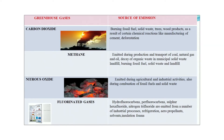The sources of greenhouse gases: carbon dioxide is the primary one — from burning of fossil fuels, solid waste, trees, and wood products, certain chemical reactions like manufacturing and cement, and deforestation. Methane is emitted during production and transport of coal, natural gas, and oil; decay of organic waste in municipal solid waste landfills; and burning of fossil fuel. Third, nitrous oxide is emitted during agricultural and industrial activities and during combustion of fossil fuel and solid waste.